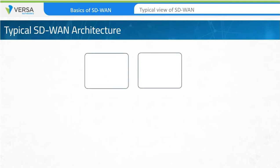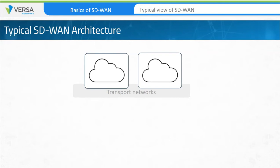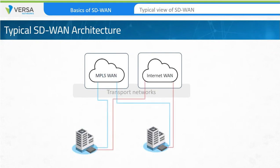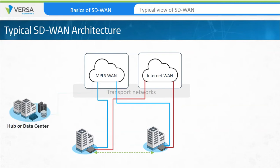A typical SD-WAN architecture will include several components. First of all, there will be some type of network to connect locations. Common WAN connection types include MPLS-based services and public internet connections. Branches use these public and private network services to communicate with each other. Many deployments require that remote sites connect to a hub location that serves as a centralized connecting point. It's common to find hub devices at a corporate headquarters office, at a data center, or wherever a pool of resources is located that will be accessed by branch devices.